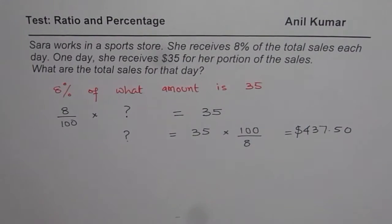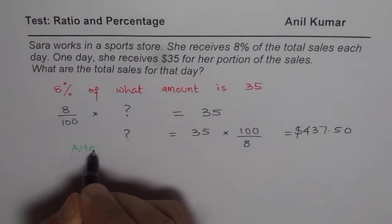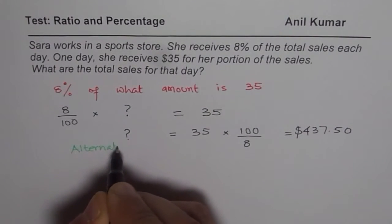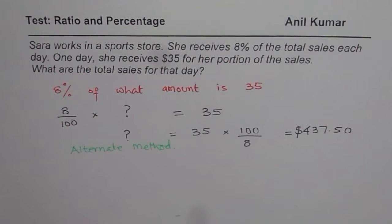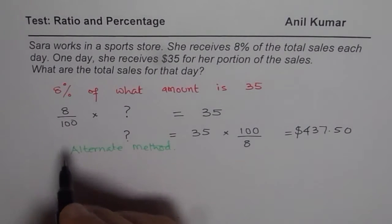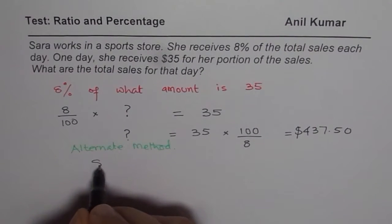The other way which I am saying alternate way of doing it is as follows. So let me write down the alternate method. So alternate method is like ratios. We can say 8% she is getting. So 8 out of 100.